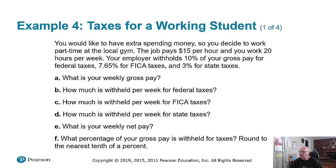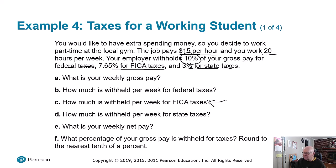Here's a working student example you might find interesting. This person is making $15 an hour, 20 hours a week at a gym. Some of their money is taken out for federal taxes, some for FICA, and some for state taxes. Remember, some of those things are being used for you too — if you saw potholes all over the road on the way to school you'd be complaining, but that's taken care of by state and federal taxes.